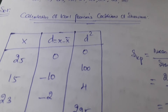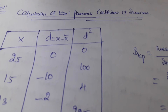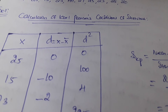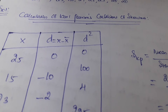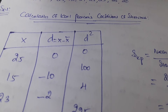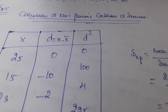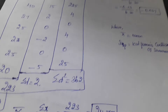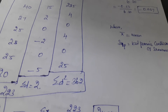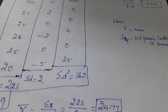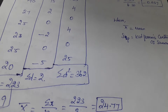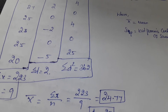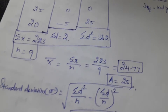Next, we need to find t squared — just square each of the t values. Then we total them: summation of t squared equals 362.